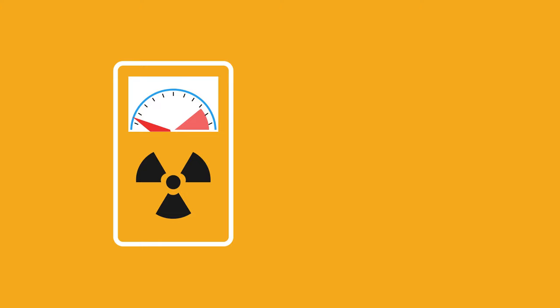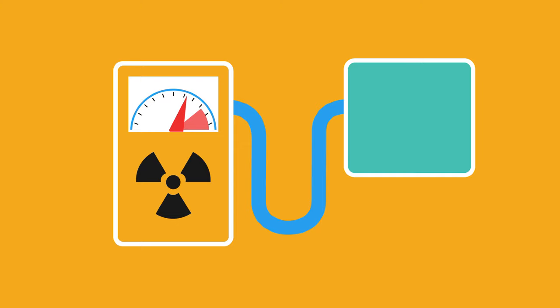If we record the radioactivity of a material over time with a Geiger-Müller tube and a counter, then we can plot activity, or a measure of the atoms decaying, against time to get a graph like this. The graph is for the isotope iodine-131. Notice how the count rate halves every eight days, so we say it has a half-life of eight days.